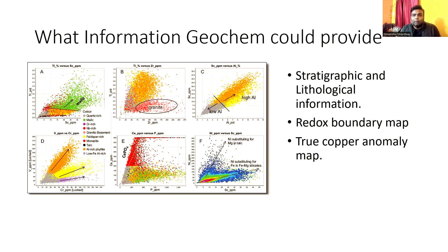With cluster analysis, we can build a lithological information database. We can also trace the redox boundary, because redox reactions are very important in mineral deposition — oxidation or reduction reactions control where copper is deposited. We also need to find the true copper anomaly, because raw anomalies from geochemical data can be misleading. We must remove misleading information using factor analysis, principal component analysis, cross-plots, or Pearson correlation plots.